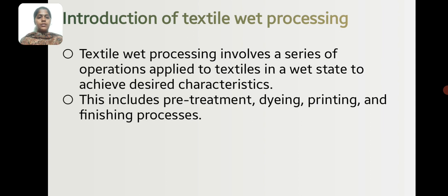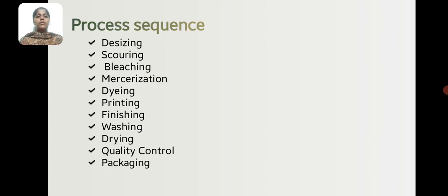Introduction to Textile Wet Processing. Textile Wet Processing involves a series of operations applied to the textile in wet state to achieve desired characteristics. This includes a pre-treatment, dyeing, printing and finishing process sequence.